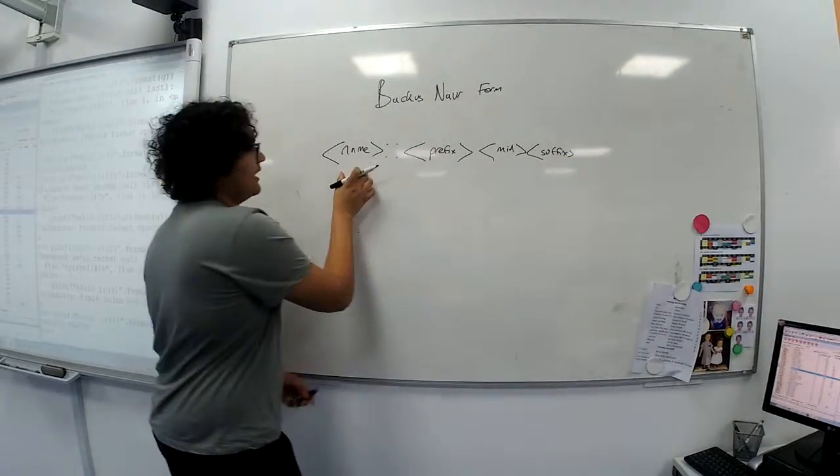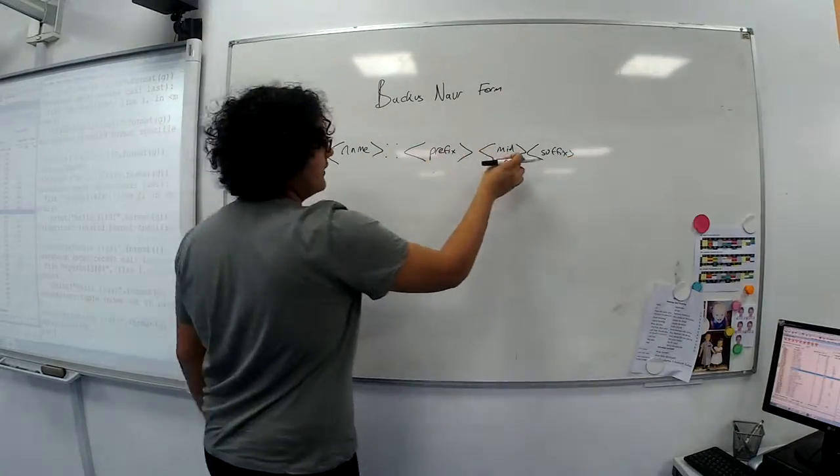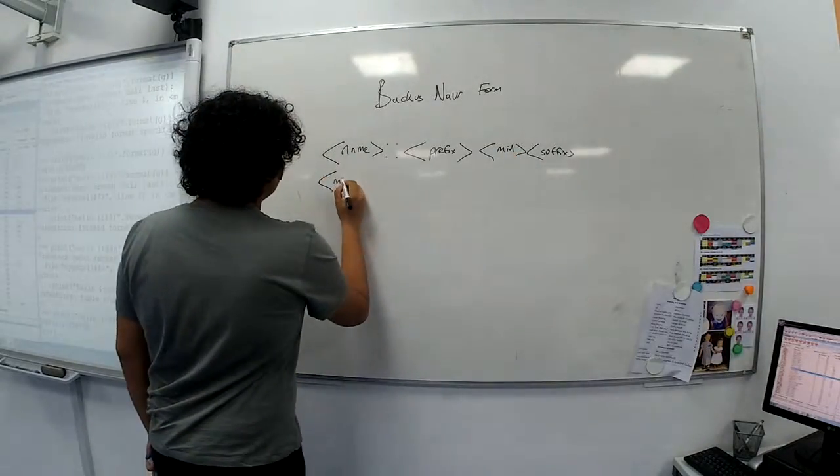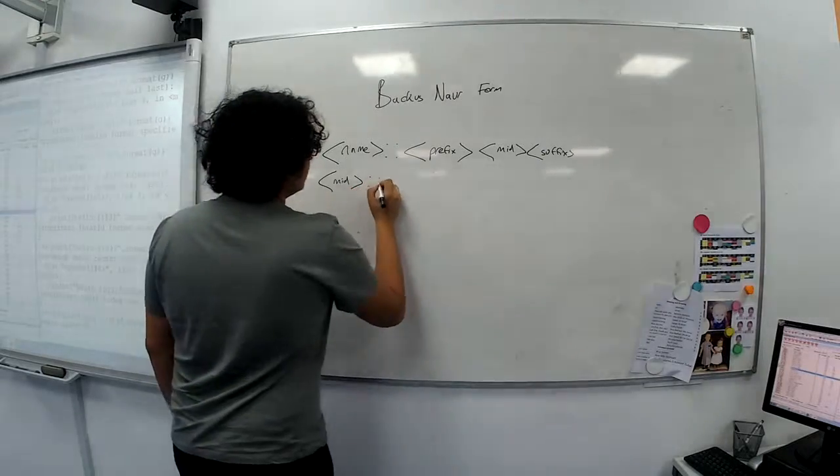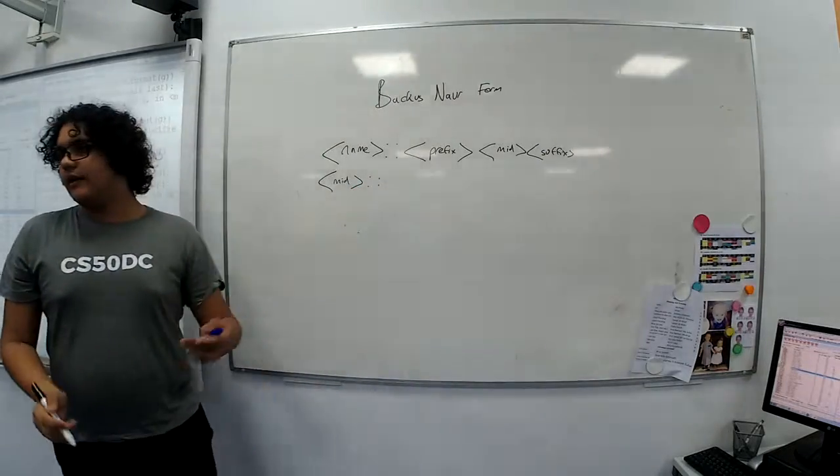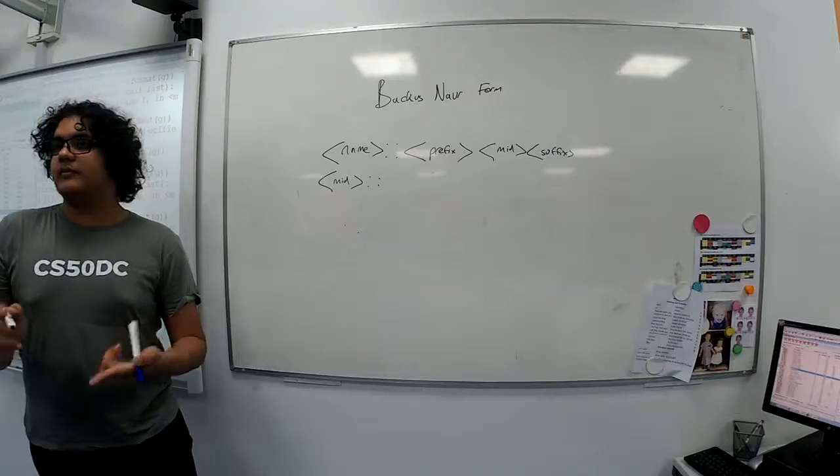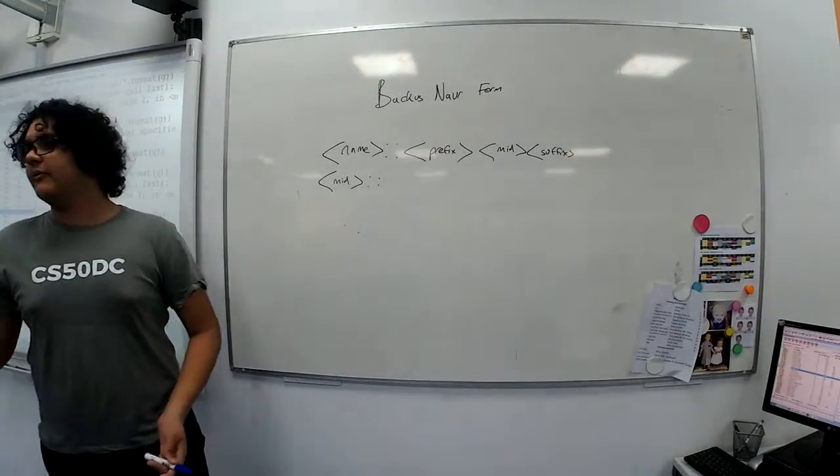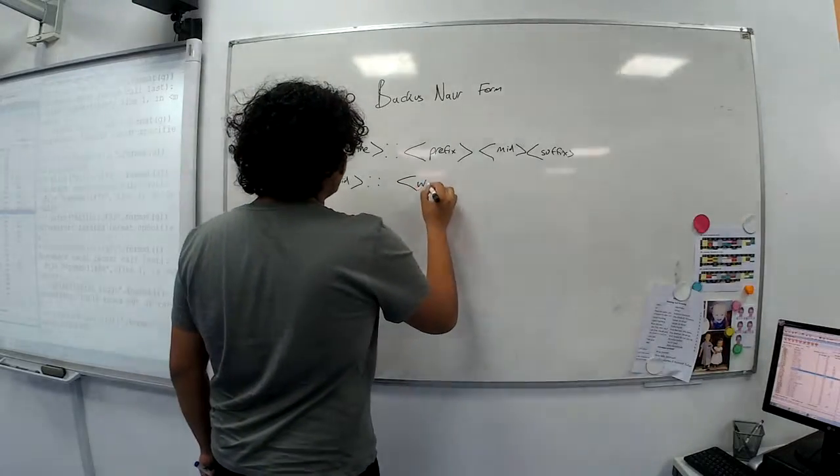So, we've defined what a name is, but we haven't defined what a prefix, or mid, or a suffix is. But we can easily do that on other lines. We can say that a mid... Well, a mid would consist of words. A series of words. It could be any number of words. You could have a person with five names or with one name. So we could say it could be one word.